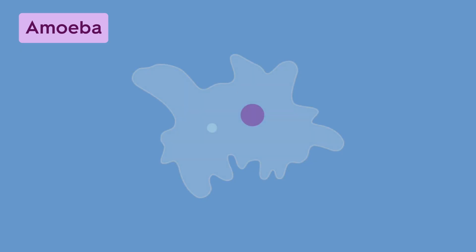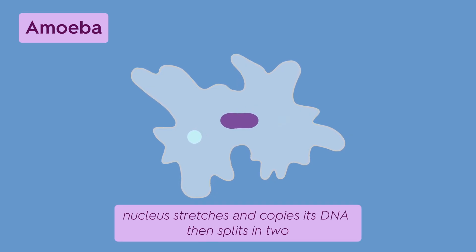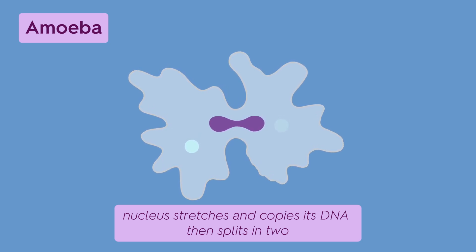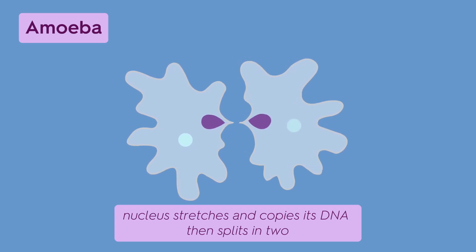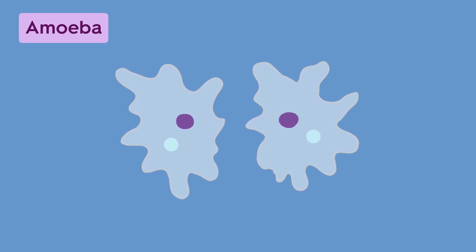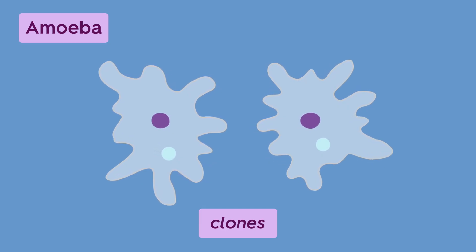Let's look at amoeba, a classic unicellular organism. When an amoeba is ready to reproduce, its nucleus stretches out and copies its DNA, then splits in two. Soon after, the whole cell divides, giving rise to two identical amoebas — like twins, since they come from just one parent and share the exact same DNA. They're called clones, and that's something you'll see in all types of asexual reproduction.